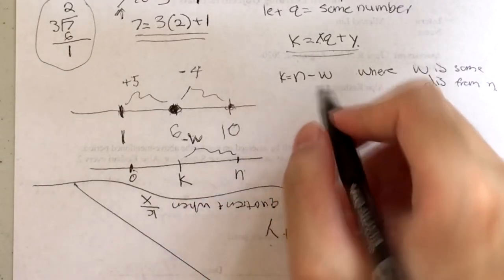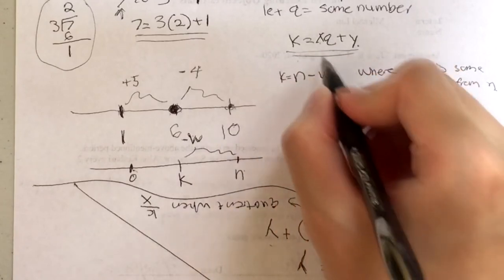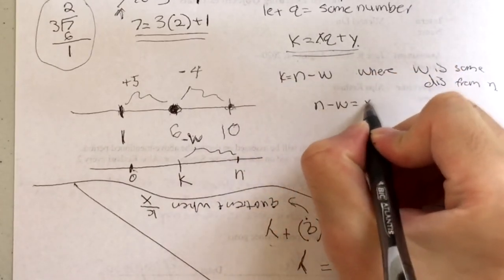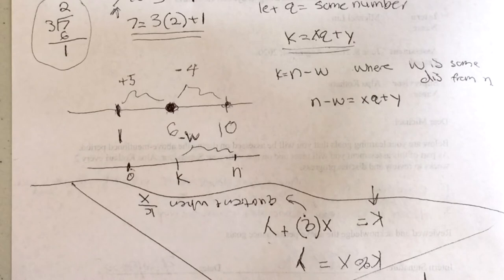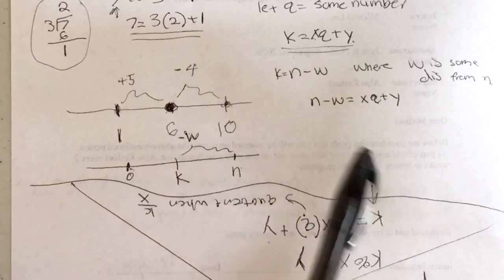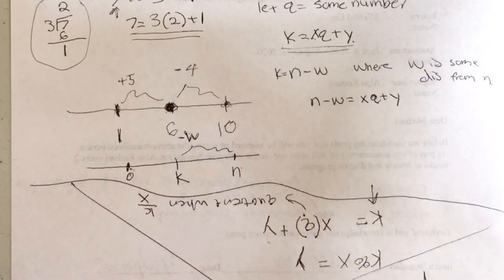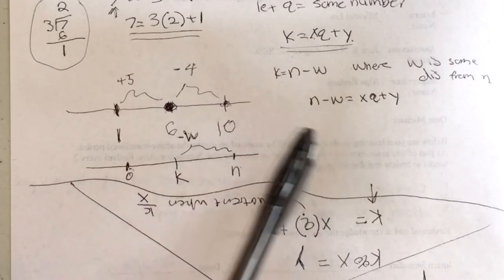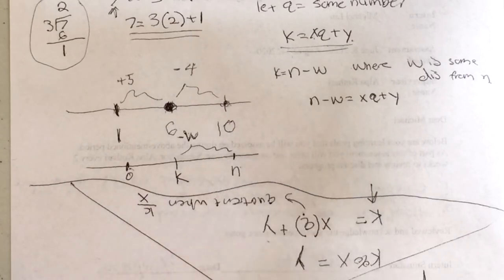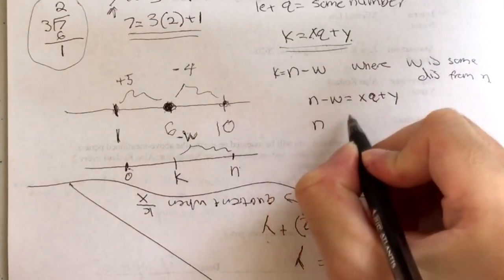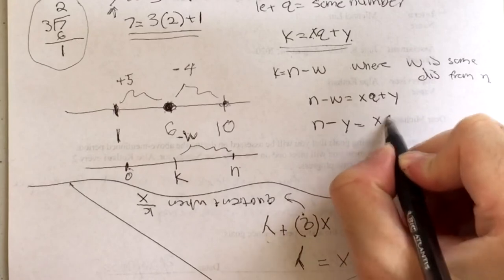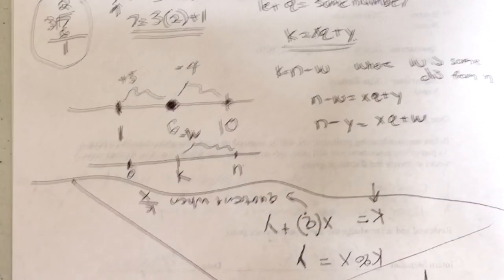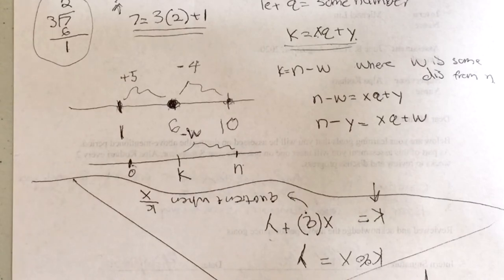So now I have n minus w. Let's substitute n minus w in for k. So: n minus w equals x*q plus y. Now we rearrange — add w to both sides and subtract y from both sides — and we get: n minus y equals x*q plus w. At this point you should realize that you can actually get the number you want.